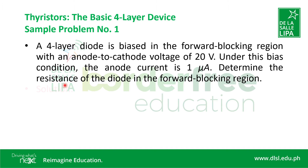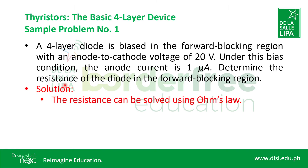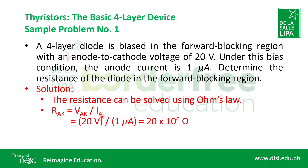For the solution, the resistance needed for this problem can be solved by using the basic Ohm's law. The given values are the voltage and the current. Using the formula resistance equals voltage over current, we simply substitute the given values and arrive at the correct answer: the resistance across the diode in the forward blocking region is 20 megaohms.